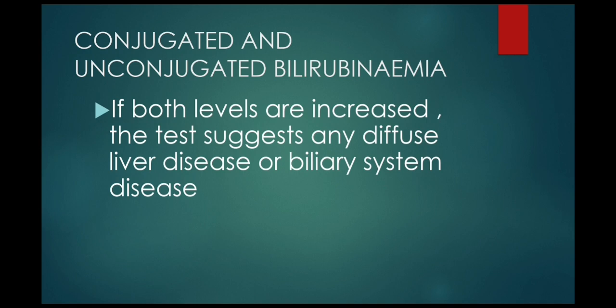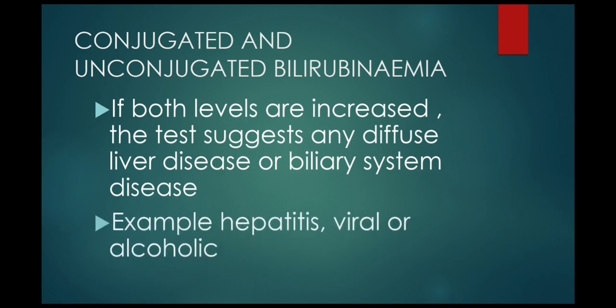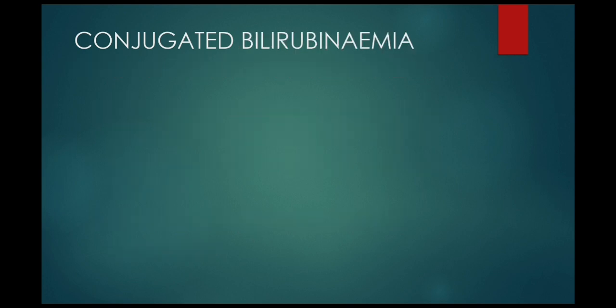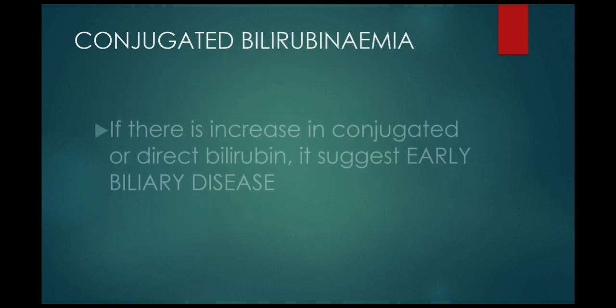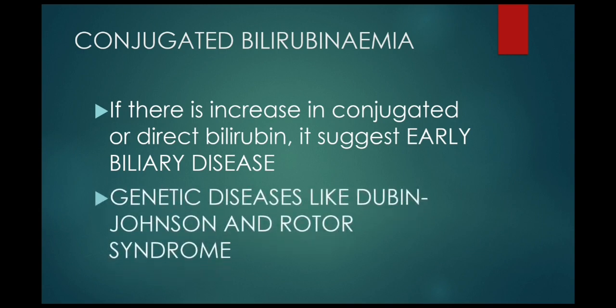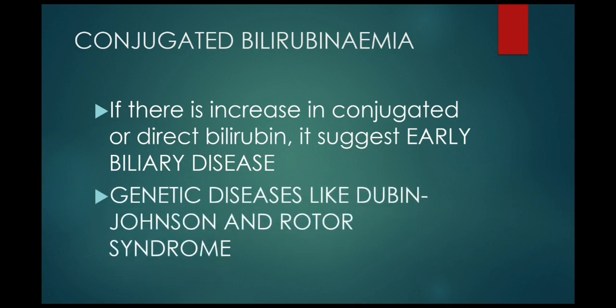For example, hepatitis — viral or alcoholic. When there is an increase in conjugated or direct bilirubin, it suggests early biliary disease. Some genetic diseases like Dubin-Johnson syndrome and Rotor syndrome also present with conjugated bilirubinemia.